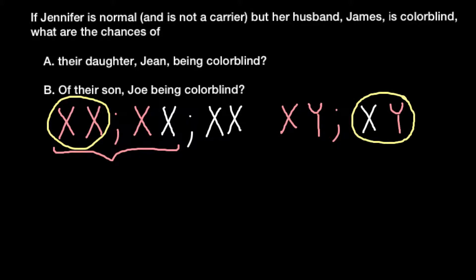Now we can easily solve this problem if we build a Punnett square. Here would be the genotype of Jennifer, and on the other side would be the genotype of James.